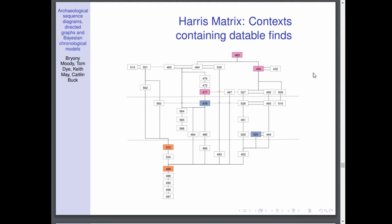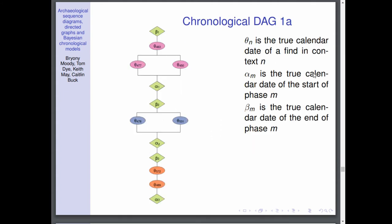So going back to the Harris matrix, suppose we found datable finds in the colored contexts, seven in total. We can produce this chronological DAG here where we have the start of phases such as α_m, so start of phase three is at the bottom here, the end of phases so β_m is the end of phase m, and then anything that's dated θ_n is the date of a context found in context n.